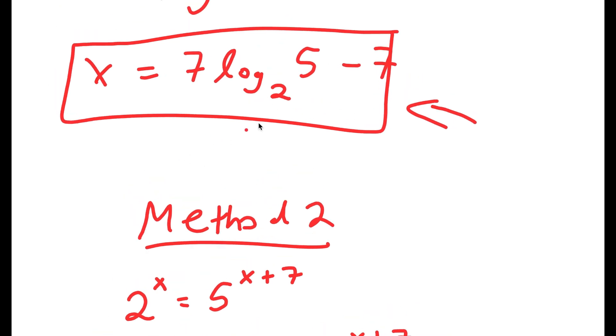So x equals 7 times log base 2 of 5 minus 7 is my answer, and both methods give the same result.